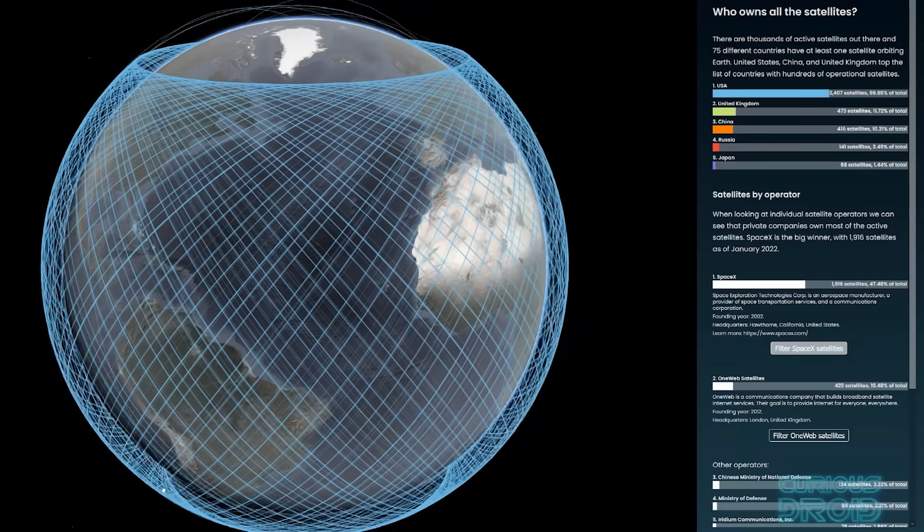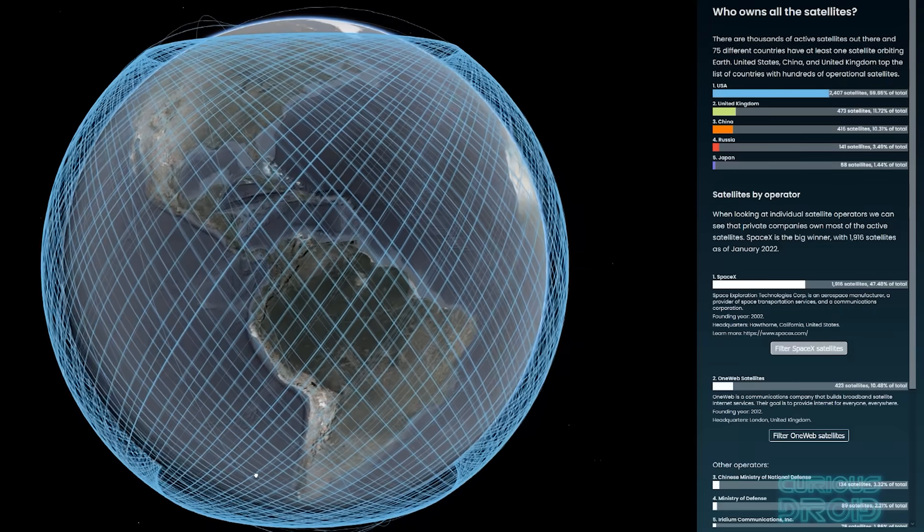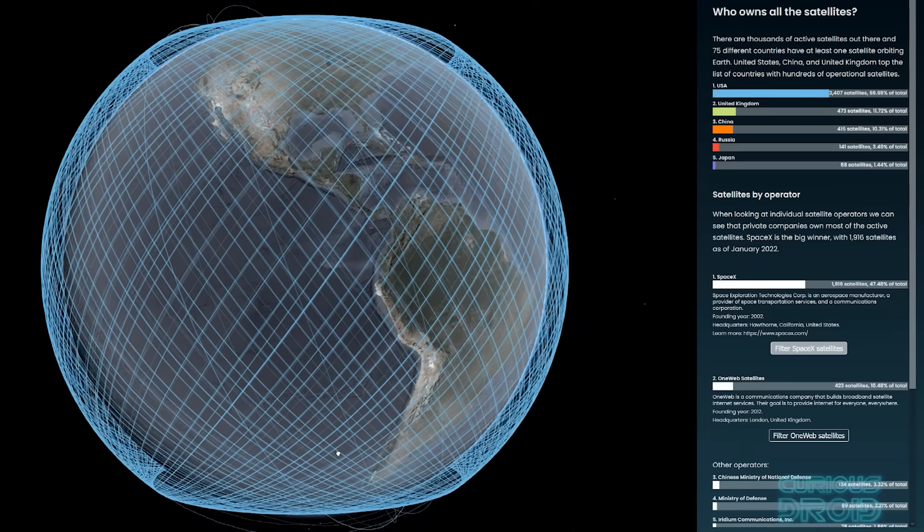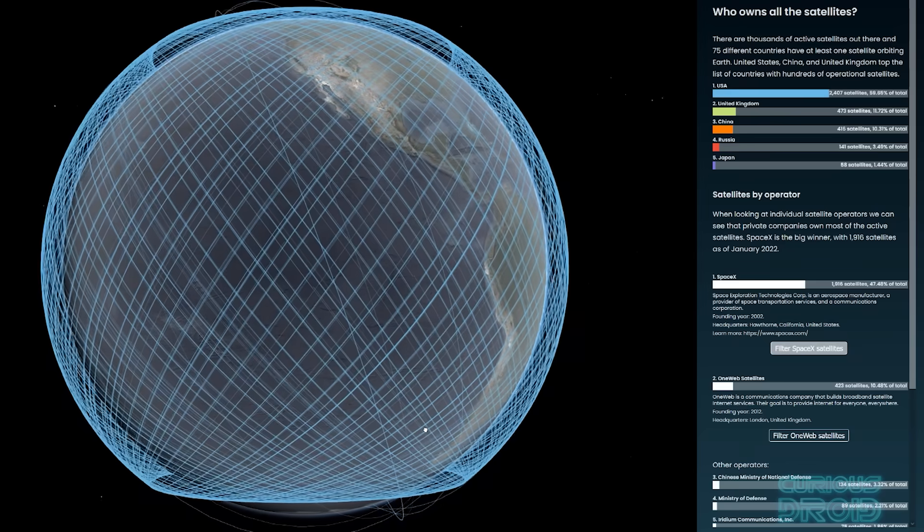Satellite constellations are networks of satellites designed to work together, providing global coverage for various purposes like communication, navigation, and earth observation. This allows coverage at or near global levels.